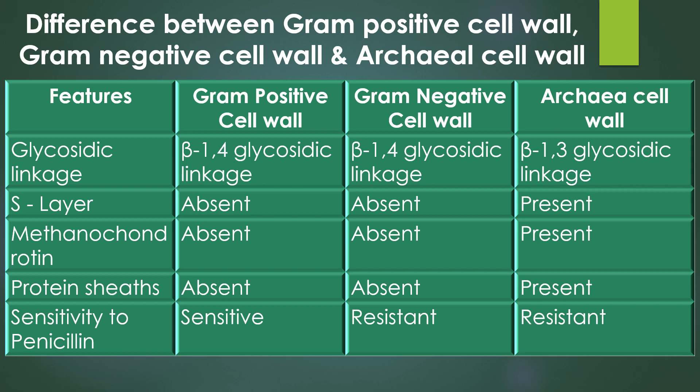Regarding glycosidic linkage: beta-1,4 glycosidic linkage is present in bacteria (both gram-positive and gram-negative cell walls), while archaea cell wall has beta-1,3 glycosidic linkage. S-layer, methanocondroitin, and protein sheets are all present only in the archaea cell wall and absent in both gram-positive and gram-negative cell walls.